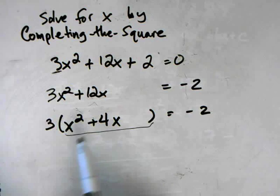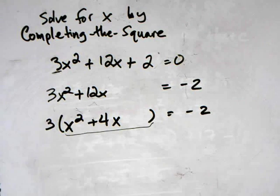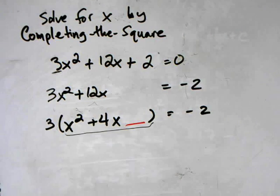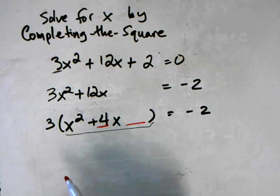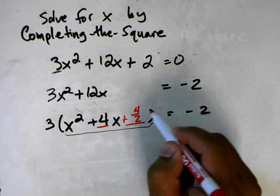Now you want to ask yourself what number goes in here so that we can effectively complete the square. If you recall, it's one half of this term over 2, so I'll write this out here: it's 4 over 2 squared.